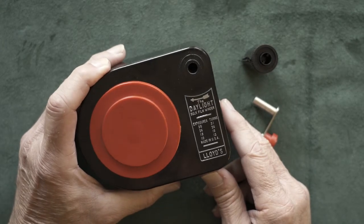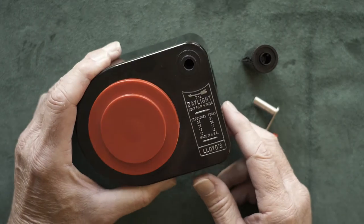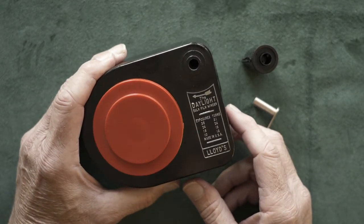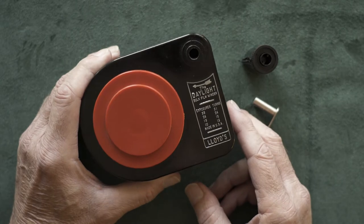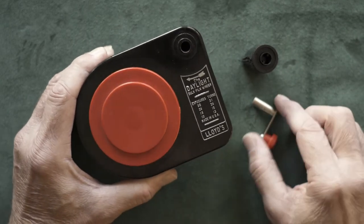We're going to take a look at this Lloyd's daylight bulk film winder, and this is probably from the 70s by the looks of the instructions that were in it. I've used Watsons before, but this is the first Lloyd's I've ever had, so it's kind of new to me.